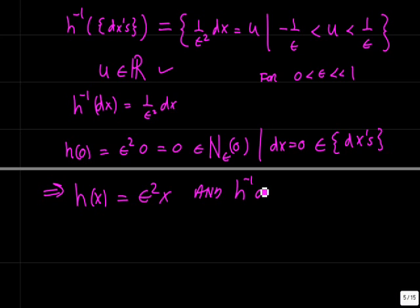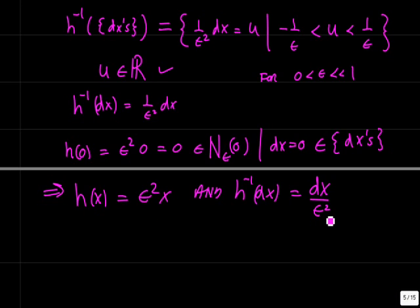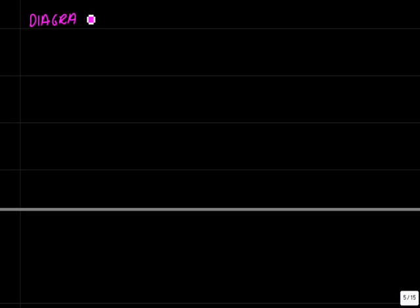So we have our answer: h of x equals epsilon squared times x, and h-inverse of dx equals dx over epsilon squared. This gives us a bijective homomorphism between the real numbers and an epsilon neighborhood of 0 — the set of differentials. Now, this analytic treatment has a lot of writing in it and may not be that geometrically intuitive, so let's make a diagram of this.